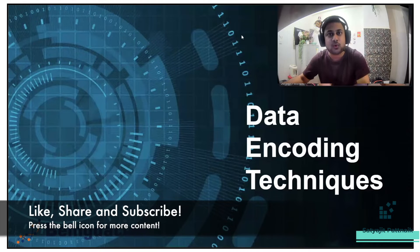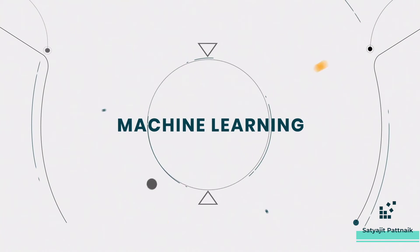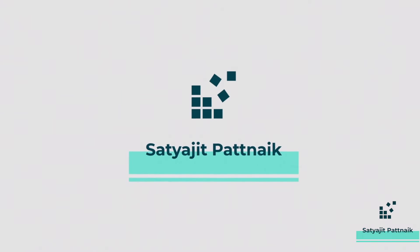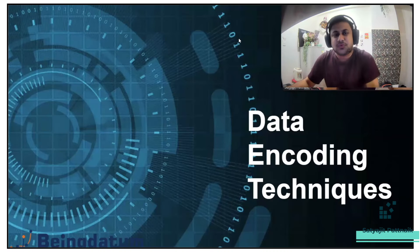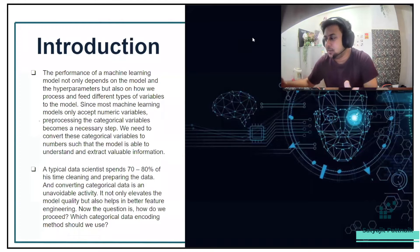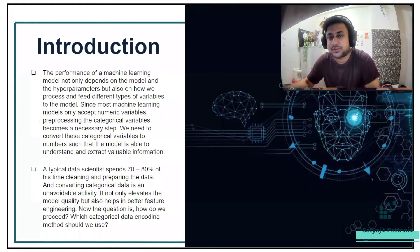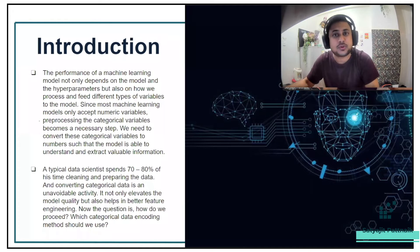Today's topic is going to be on data encoding techniques, so let's get started. Data is basically of two types: numerical data and categorical data, and ultimately we have to convert everything to numerical before feeding the data to models, because computers and models understand just numerical data. The performance of a machine learning model not only depends on the model and hyperparameters but also on how we process and feed different types of variables.